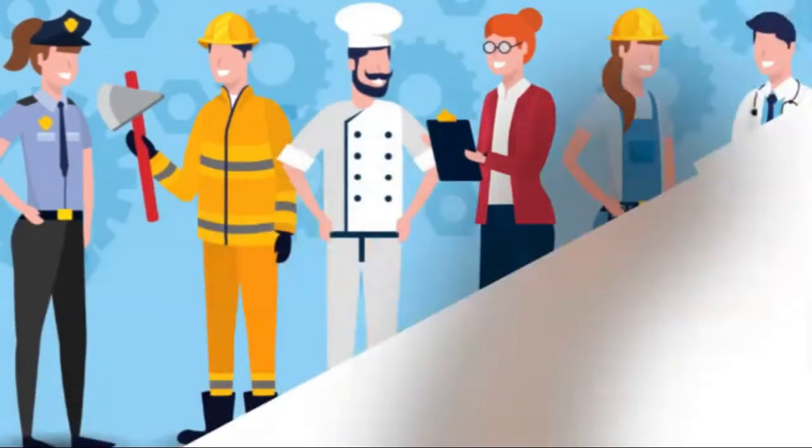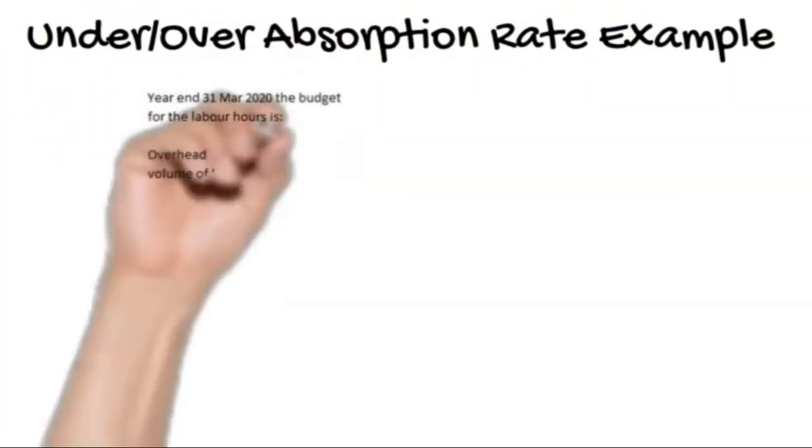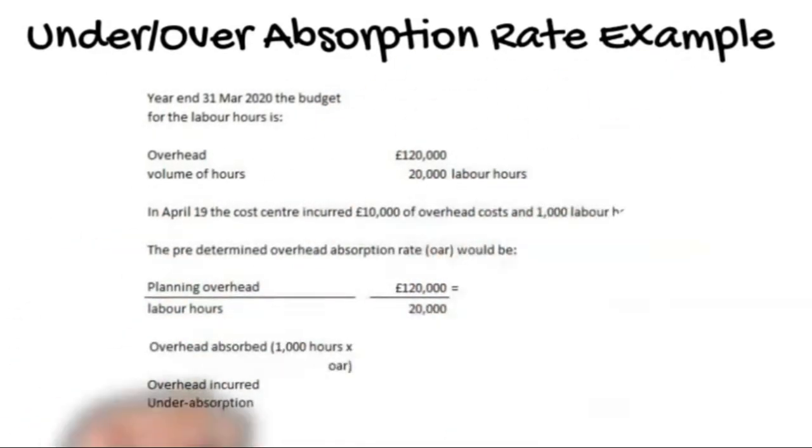Let's look at an overhead under or over absorption example. For the year ending 31st of March we have a budget of total overhead cost of £120,000 and volume of hours of 20,000 labour hours. In April the cost centre actually incurred £10,000 of overhead costs and 1,000 labour hours.